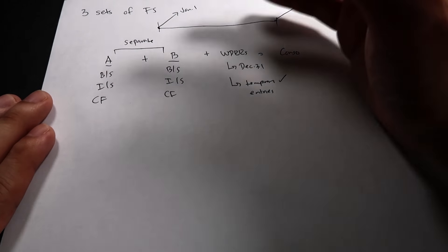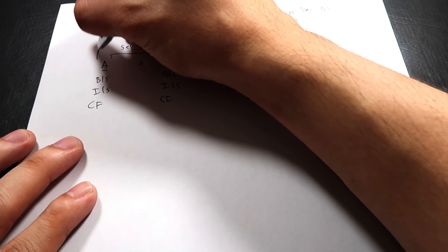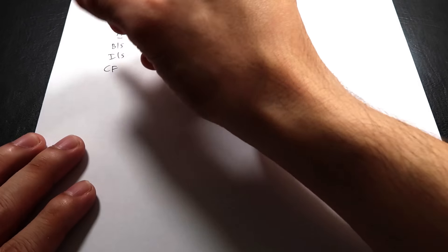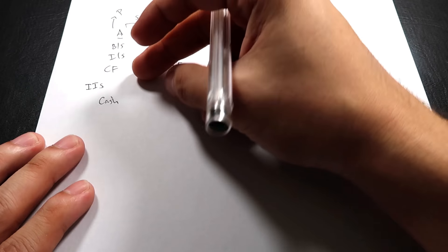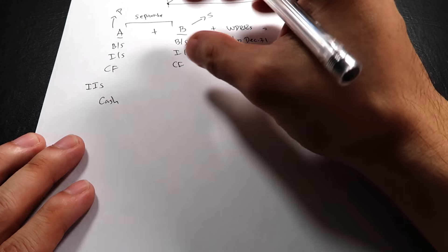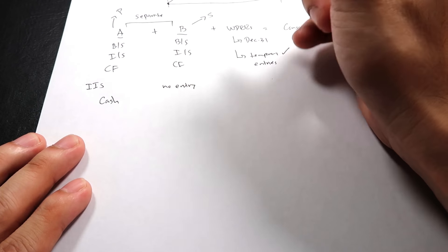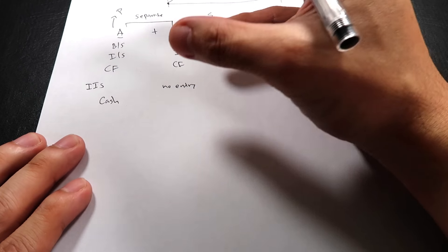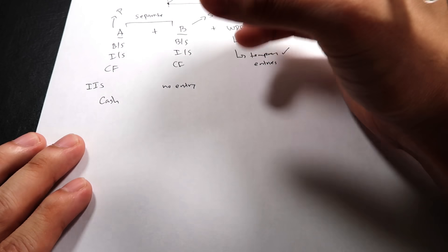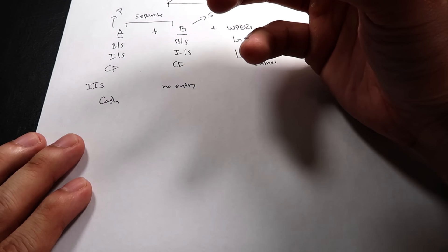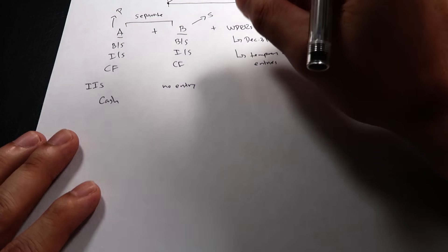Let's review the working paper eliminating entries. When A (the parent) buys B (the subsidiary), the entry in the books of A is: debit Investment in Subsidiary, credit Cash. This is the entry at the date of acquisition. Is there an entry in the books of the subsidiary? No entry. Because what you're buying in consolidation is the shares of B. The current shareholders of B receive the cash — there's a transfer of stock ownership. So there is no entry in the books of B.